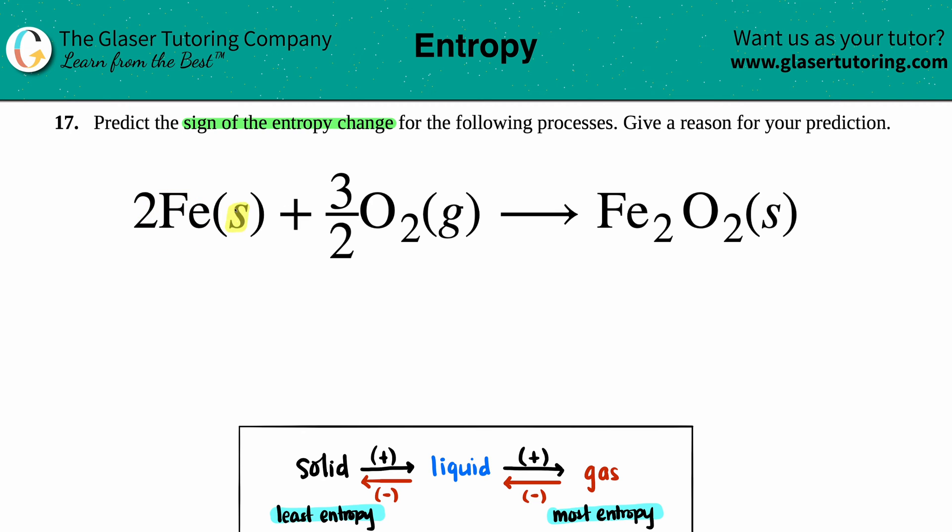So in this case, we have iron but we're starting off with a solid plus a gas, and we're going to something that is just a solid. Now we want to find out what the sign of the entropy change is.